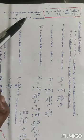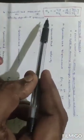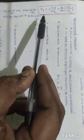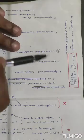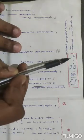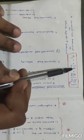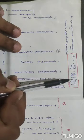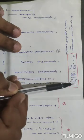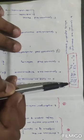So, very important point. The generalized force Qj is equal to minus ∂U/∂qj plus d/dt of ∂U/∂q̇j.